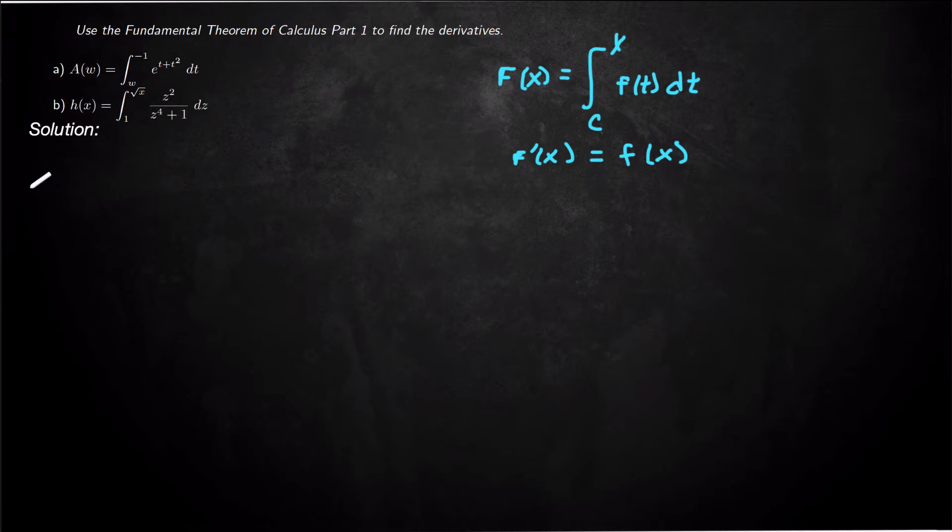So let's look at part a here. Part a is trying to trip us up by using w instead of x. So let's just keep in mind that w is the variable. So what we need to do is actually put this in the form of this integral function. The lower bound should be the constant, the upper bound should be the variable. So let's do that.